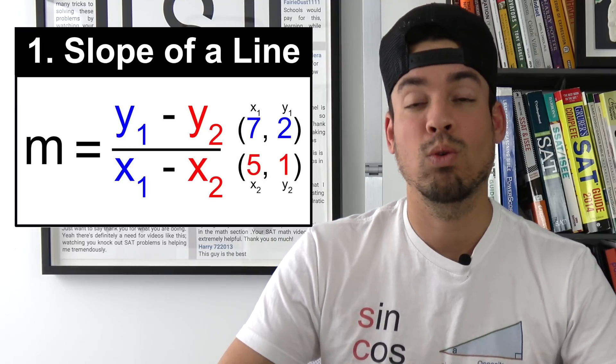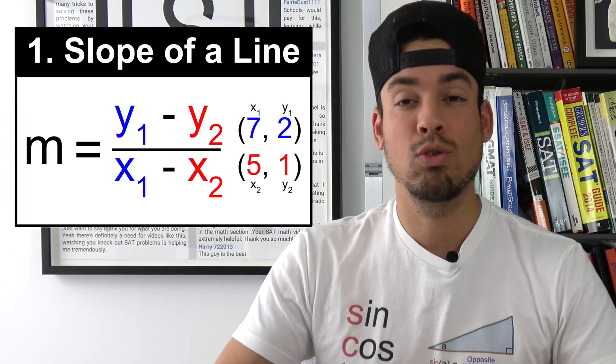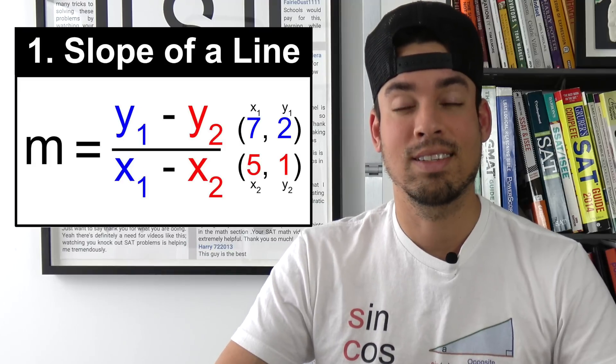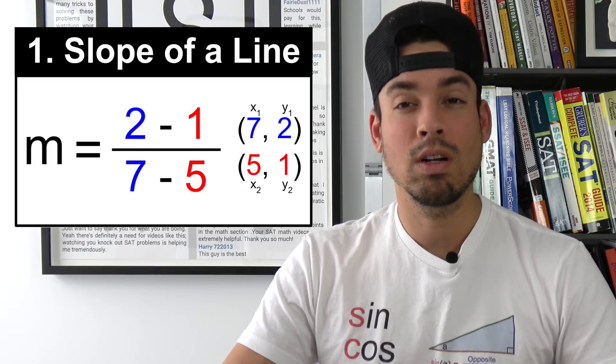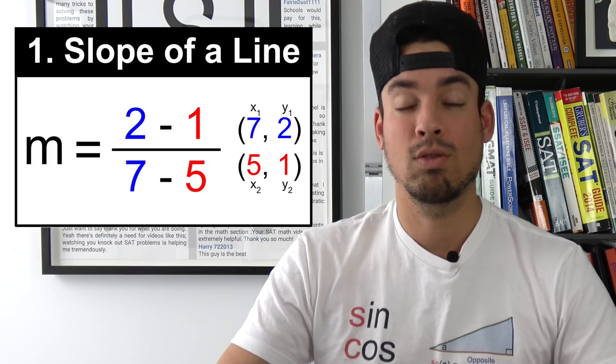Doesn't matter which one is y1 or which one is y2. You just have to choose and stay consistent. The x1 and y1 are a pair and x2 and y2 are a pair.